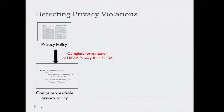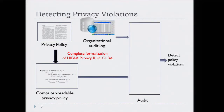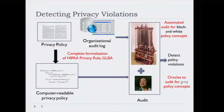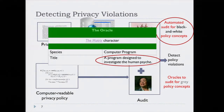We have done complete formalizations of the HIPAA privacy rule and the Gramm-Leach-Bliley Act for financial institutions — this was the first work to do the complete formalization. The audit box takes as input the privacy policy written in this computer-readable form and the organizational audit log that keeps track of who accessed what information, both programs and people, and then outputs whether the policy was violated or satisfied. Mirroring the separation of policy concepts into black-and-white and gray, we have two classes of algorithms: one supporting completely automated audit for black-and-white policy concepts, and another to help with detection of violations relating to purpose restrictions on information use.